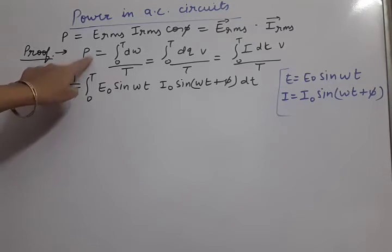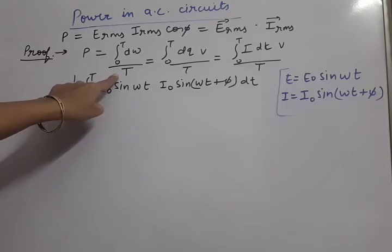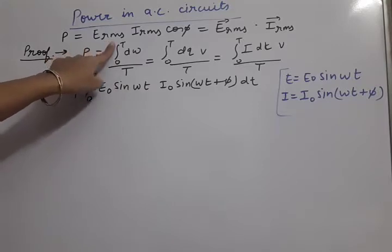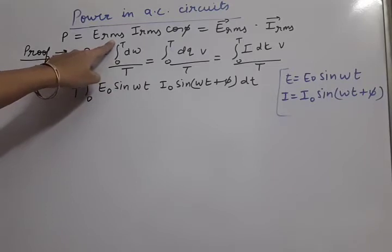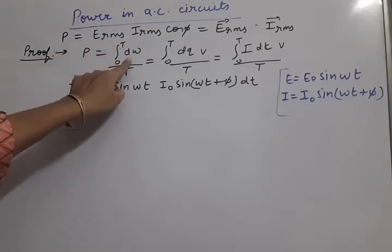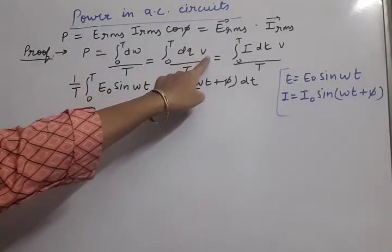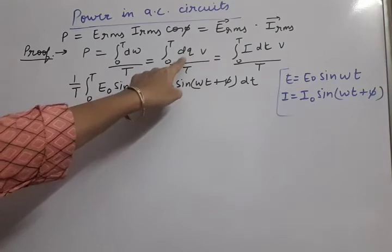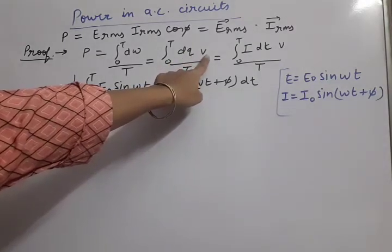Power formula: power is work upon time. For one complete cycle of AC, from 0 to capital T, total work is the integration of dW with limit 0 to T. Now dW, the work done, in terms of charge and voltage can be written as dQ × V. This formula we have already used in electrostatics.